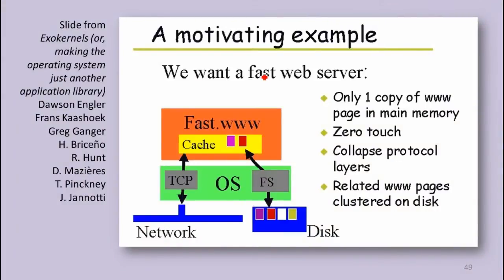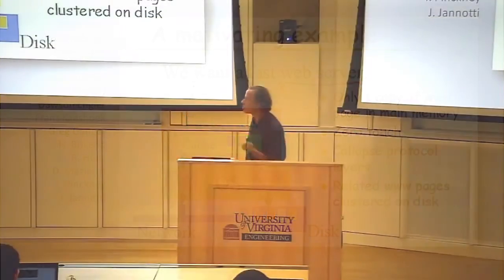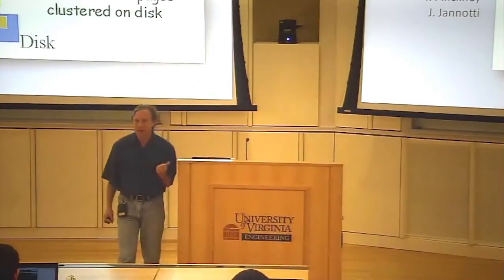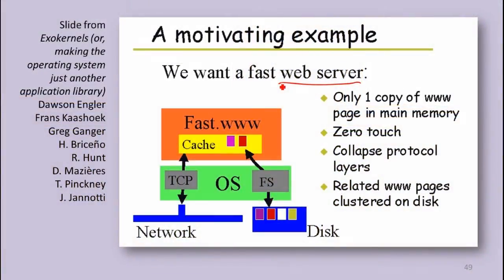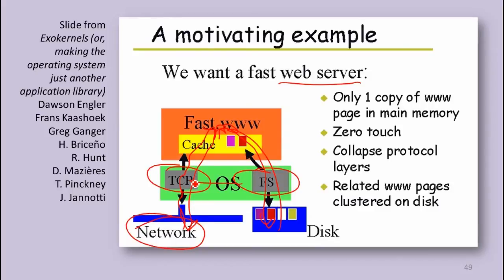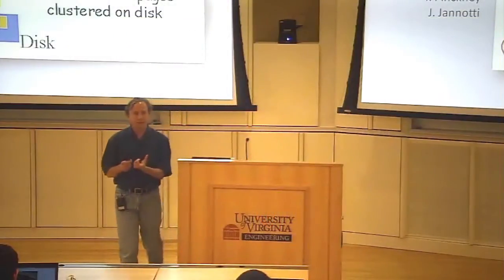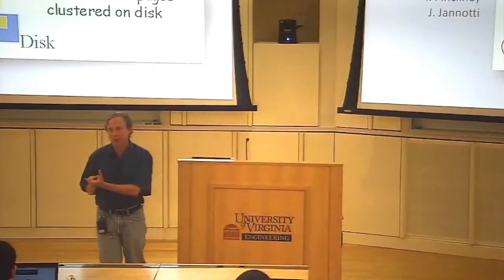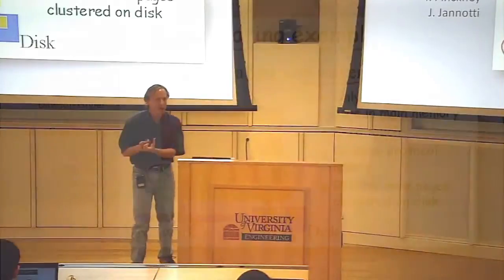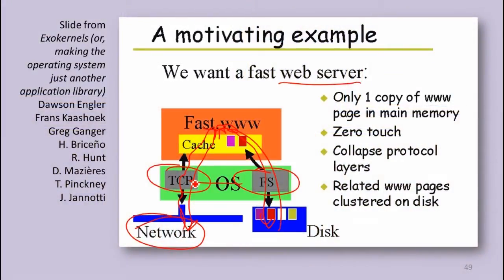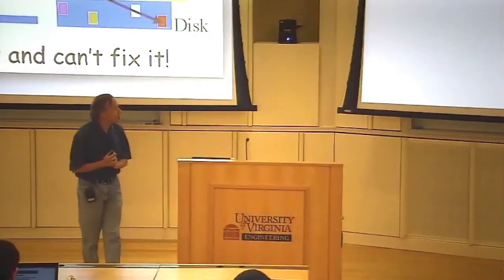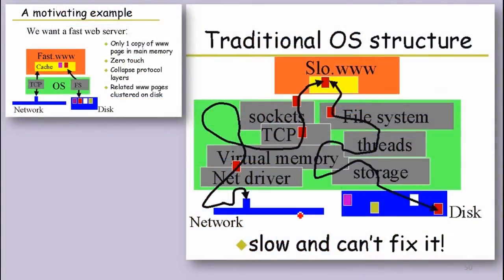The motivation for this approach: if we want to build a fast web server — this was the mid-90s, and people already cared about that — current OSes make it really hard. A request comes in on the network, it goes up to the web server, the web server goes to the file system, gets the response, sends it back to the network, going through the OS many times. The web server has no control over how files are organized to make it easy to respond to requests. You can start building a cache in your web server, but now you're competing with the cache the OS might have and the cache the disk might have. It's really wasteful to have all those different caches because they don't know enough about what the other layers are doing. That's the idea with the exokernel — to avoid going through all these layers that don't know about the application.